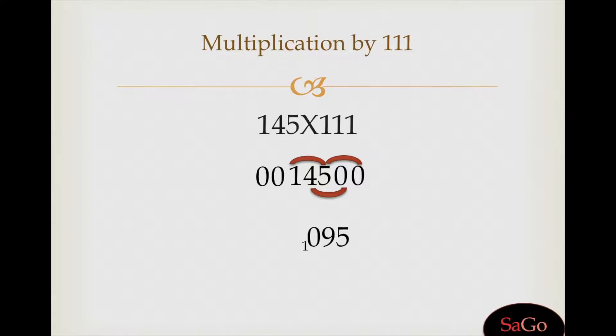Moving further, this four plus one plus zero makes five, write five. One plus zero plus zero is one, write one.